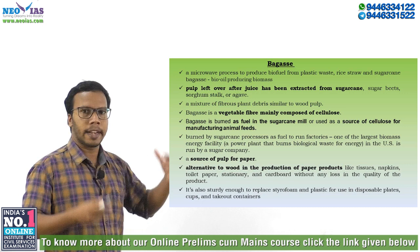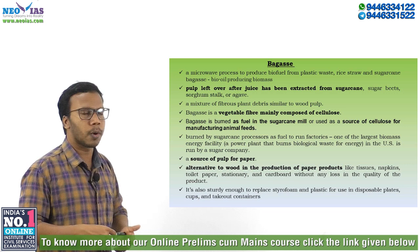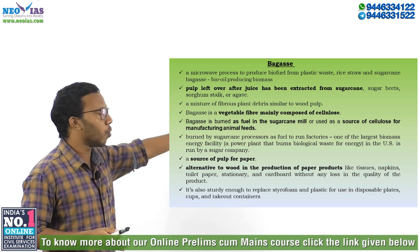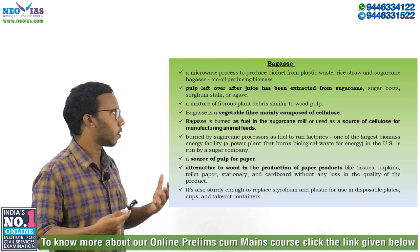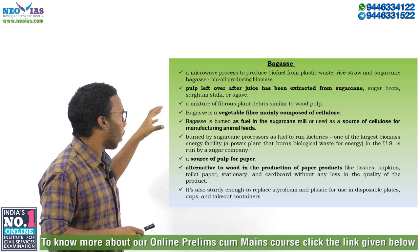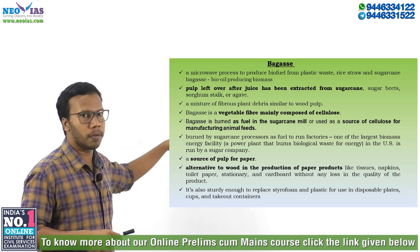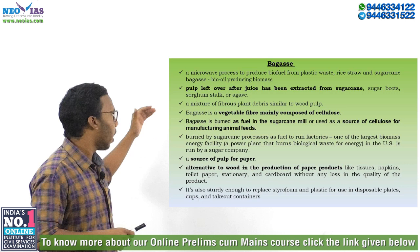From the current affair, bagasse can be used for biomass-derived bio oil. This bagasse is a vegetable fiber mainly composed of cellulose, and it is used in several industries. One important use is that bagasse is burned as a fuel in the sugarcane mill. Another use is that it is used as a source of cellulose for manufacturing animal feed. So the two major uses are: as fuel in sugarcane mills, and as a source of cellulose for animal feed manufacturing.